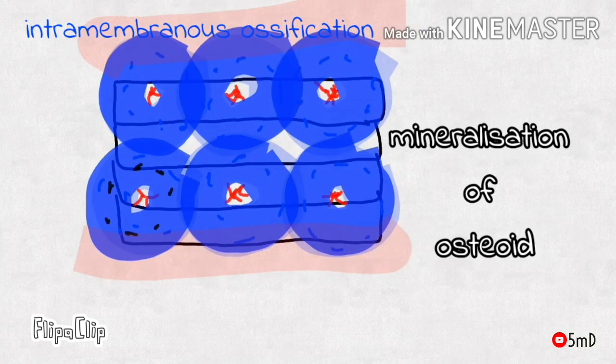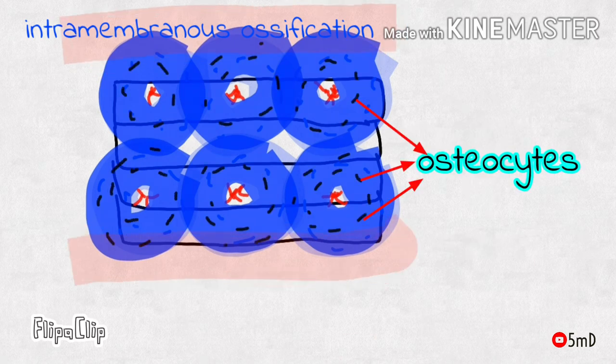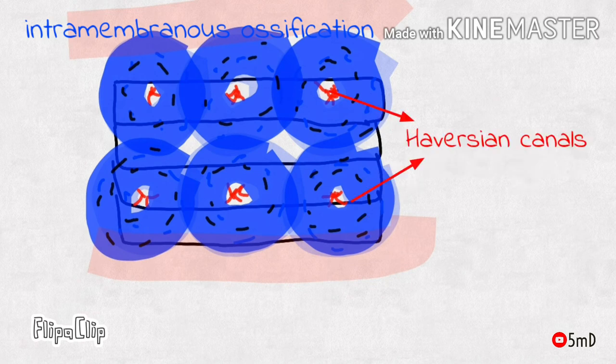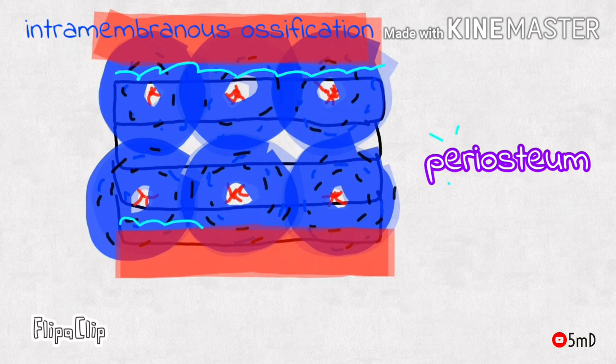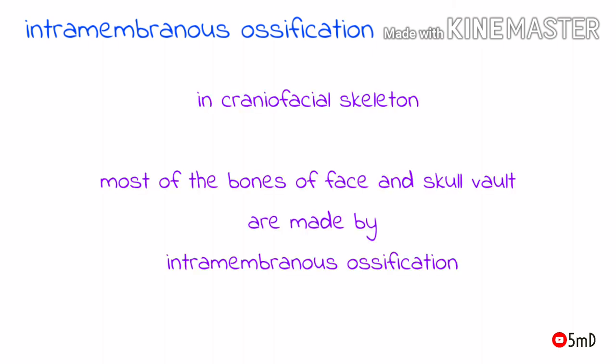The osteoblasts get entrapped within the matrix by continuous secretion. The osteoid then mineralizes to form bone, and the entrapped osteoblasts become osteocytes. The retained blood vessels are held in haversian canals, and the haversian system formed helps in the nourishment of the bone. The peripheral mesenchyme condenses to form the fibrocellular periosteum, under which further bone deposition occurs.